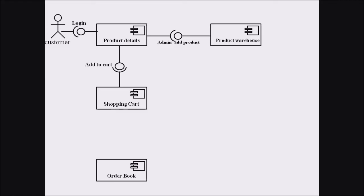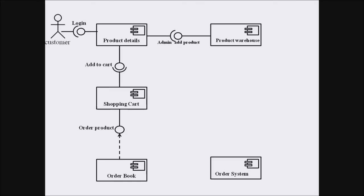Now we move to the order book component. When a particular shopping cart is filled, a customer can proceed towards ordering that set of products. The shopping cart is providing an interface towards the order book, and the order book is dependent upon the shopping cart. Once the customer has selected products, those items are built towards the order book based upon the shopping cart.